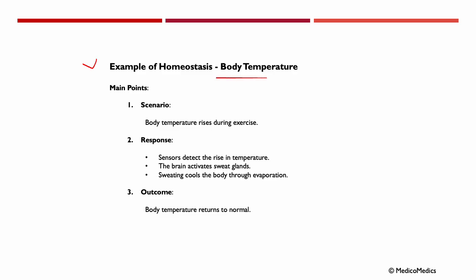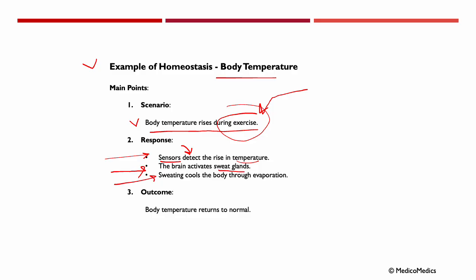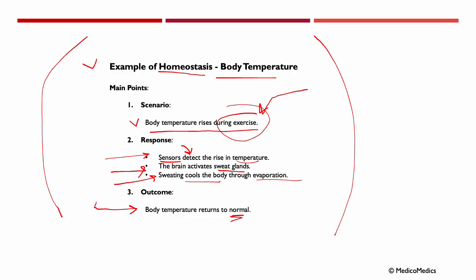Let's look at an example of homeostasis — body temperature. The scenario is: body temperature is rising during exercise. Sensors detect this rise in temperature, the brain activates the sweat glands, and sweating then cools the body through evaporation. The outcome? Body temperature returns to normal. This is a great example of how the body is supposed to maintain homeostasis.